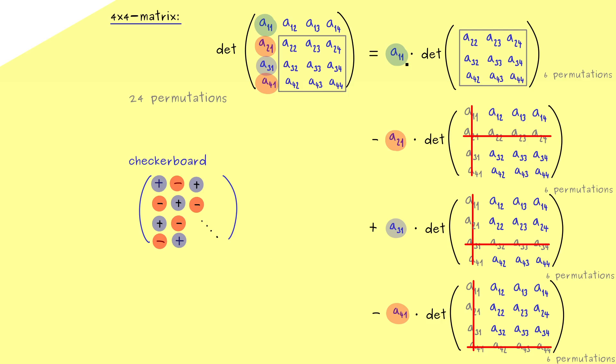Indeed, you see, the whole splitting up of the permutations we also could have done with the first row here. Or even with another row or another column. And exactly this calculation, by using one row or one column, is called the Laplace expansion.